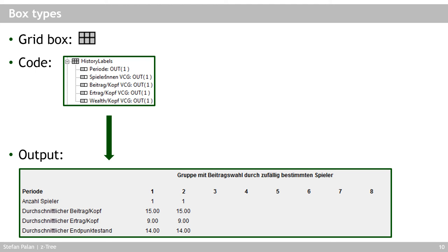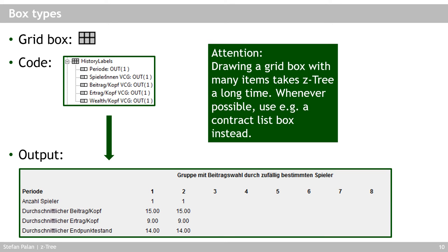Assembling a grid box can be quite tedious, and rendering a grid box with many items takes Seatree a while. Whenever possible, use a contract list box instead, because Seatree sends individual items to the Setleaf clients for grid boxes — which is slow — whereas a contract list box sends the entire table at once, which is much faster.